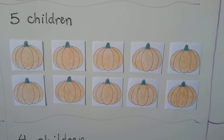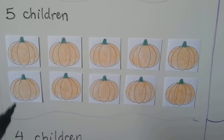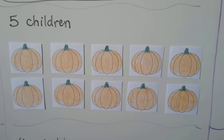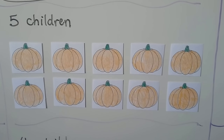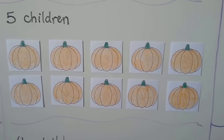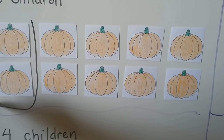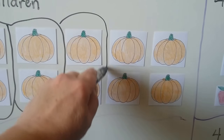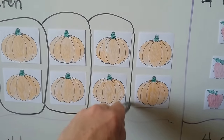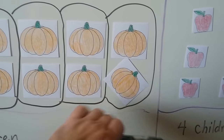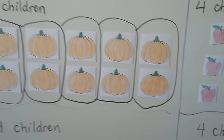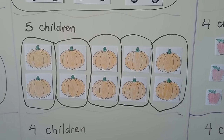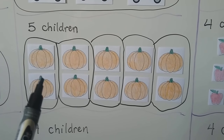Now there are five children and there are one, two, three, four, five, six, seven, eight, nine, ten pumpkins. We need to circle each child's fair share. We can make five groups — one, two, three, four, five. Now we have five groups for the five children. They each get one group, and they each get one-fifth of the pumpkins — one group out of the five groups.